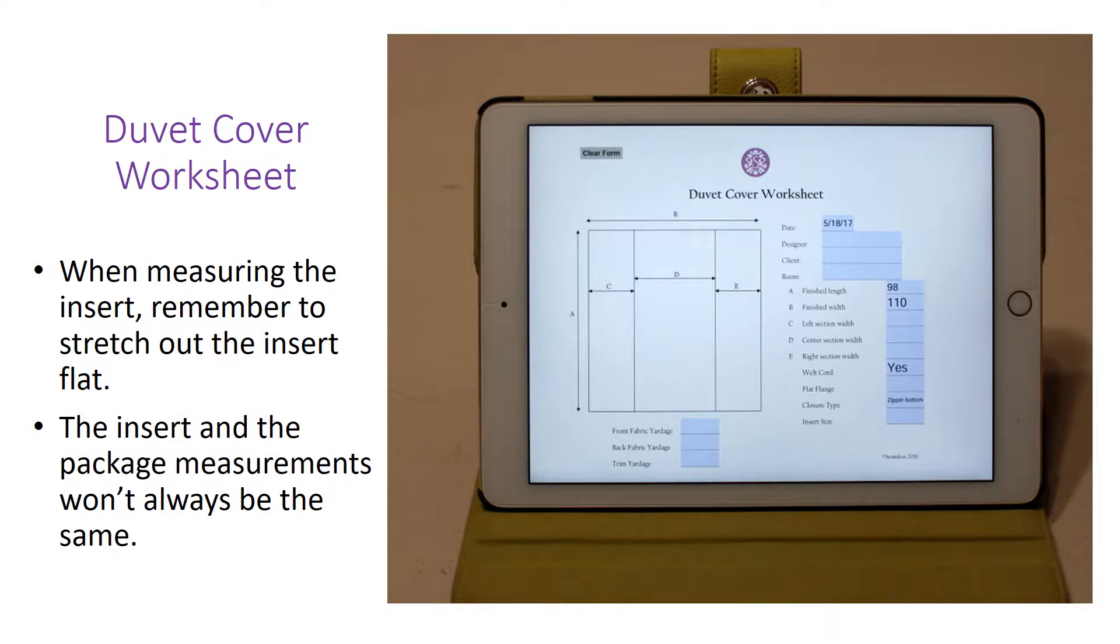I next moved to the bed, and she needed a duvet cover. I actually use a very long dressmaker's tape measure that's pliable and soft. And I stretched it across to figure finished length and finished width for the whole bed cover. The designer then actually ordered an insert to match those measurements exactly. Because sometimes those inserts are not the same as they are listed on the package. She wanted a zipper at the bottom, so I noted that. And she wanted a welt cord, so in that particular block, I put yes.